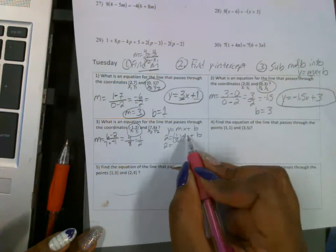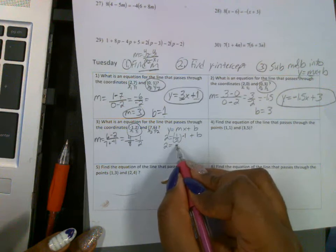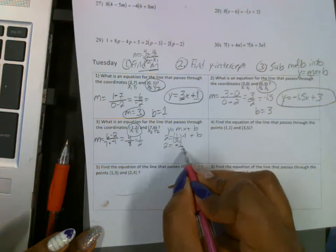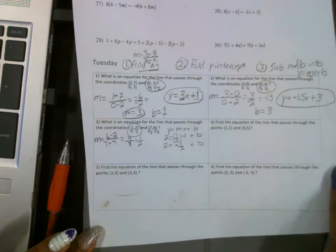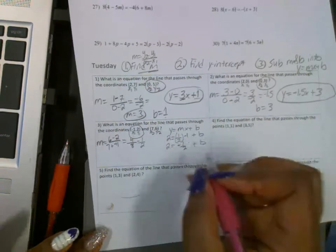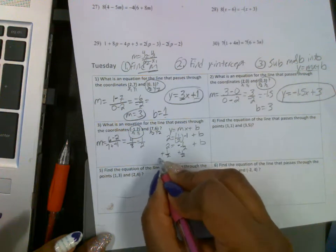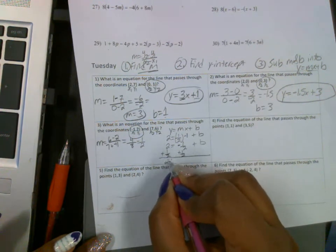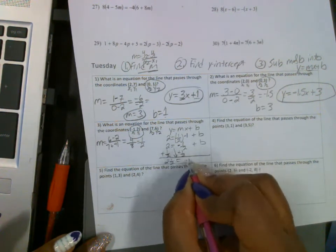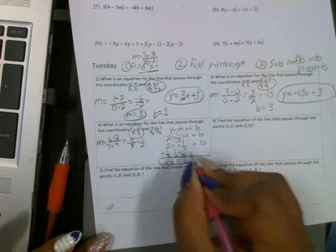Half of negative 1 is negative half. In order to get b by itself, you're going to add that half to both sides. So when you add a half to 2, you get 2 and a half. So your b here is 2 and a half.